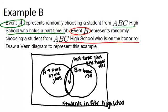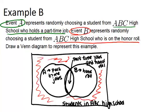Now because there are people that will neither have a part-time job nor be on the honor roll, those will be all the people that are on the outsides of the circles out here. So if you found a person like that, they would go on the outside of the circles.